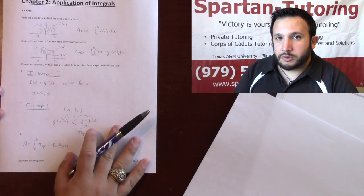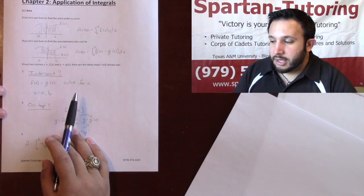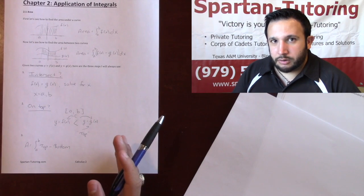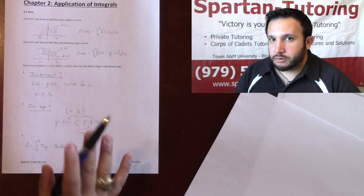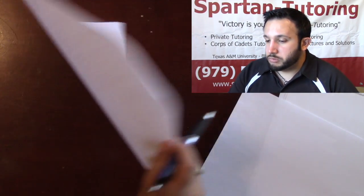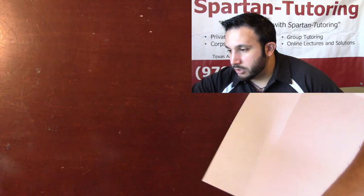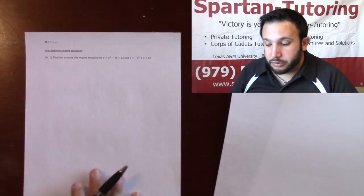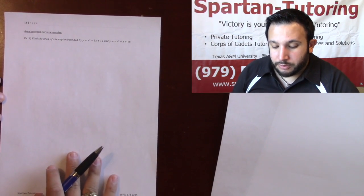I've got three examples: I'm going to show you how to deal with x's, how to deal with y's, and what to do if you have multiple x values and two different regions. So let's go ahead and actually do an example. Hopefully you've got those three steps with you, because as we go through each example, those are the three steps I'm using.